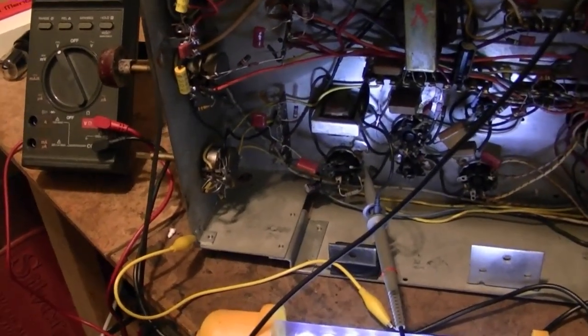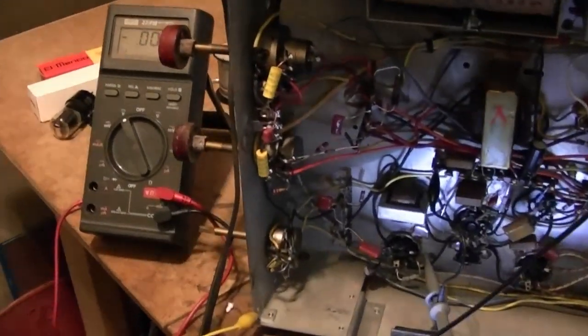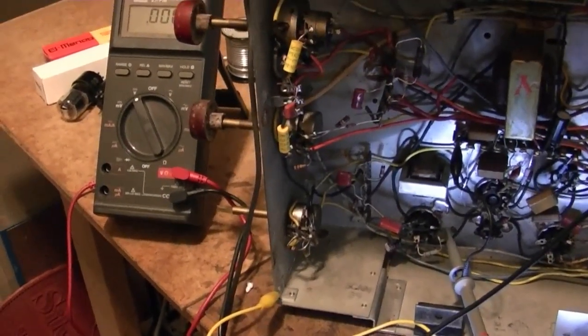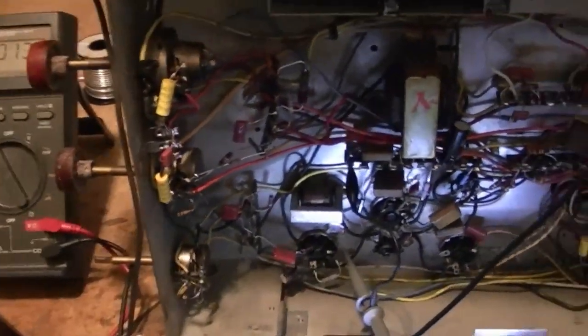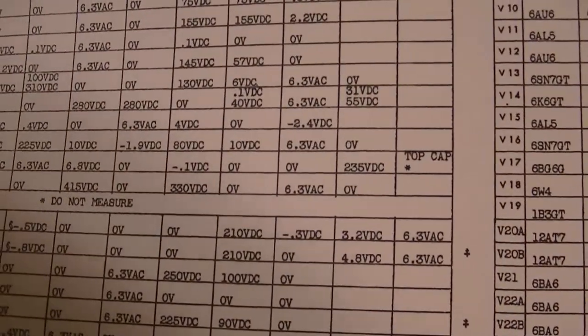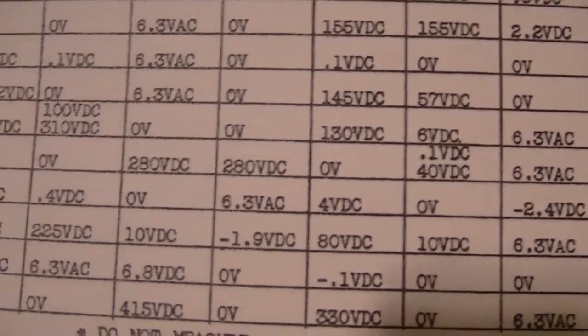I'm attempting to troubleshoot the vertical linearity issue with this set. I checked the DC voltages on the vertical output tube and they seemed okay. A little high on pins 3 and 4, getting closer to 300 rather than 280 but I really don't think that's an issue.